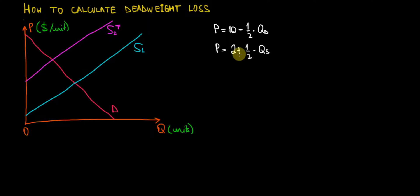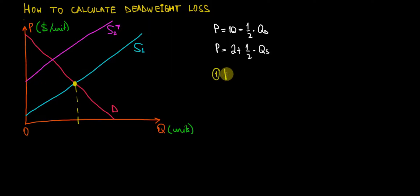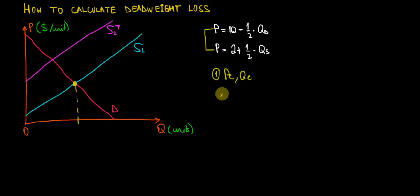With that being said, let's start. The first thing we have to look for is the quantity equilibrium and the price equilibrium before the government imposes the tax. We're looking for PE and QE. In order to do that, we have to make sure that consumers agree on the price they pay to the sellers, so the demand function price must be equal to the supply function price. That gives us: 10 minus 1/2 times quantity demanded equals 2 plus 1/2 times quantity supplied.